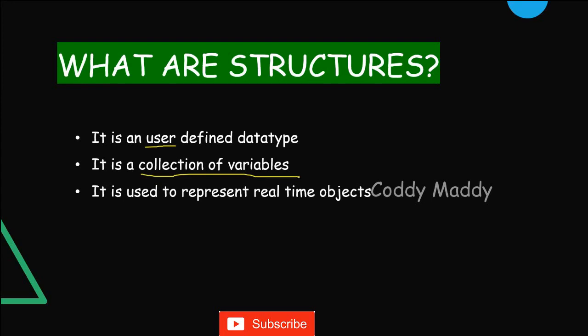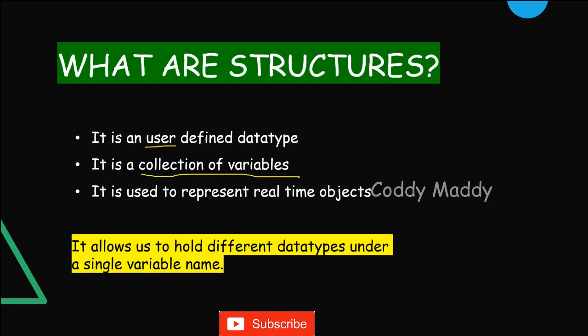A structure is used to represent a real-time object. In the real world, an object is not going to be only of int or only of character type. In order to represent a real-time object, we basically start with structures. One of the biggest advantages of using structures is that it allows us to hold different data types under a single variable name — and this collection of variables is identified with a single name, that is the structure name.